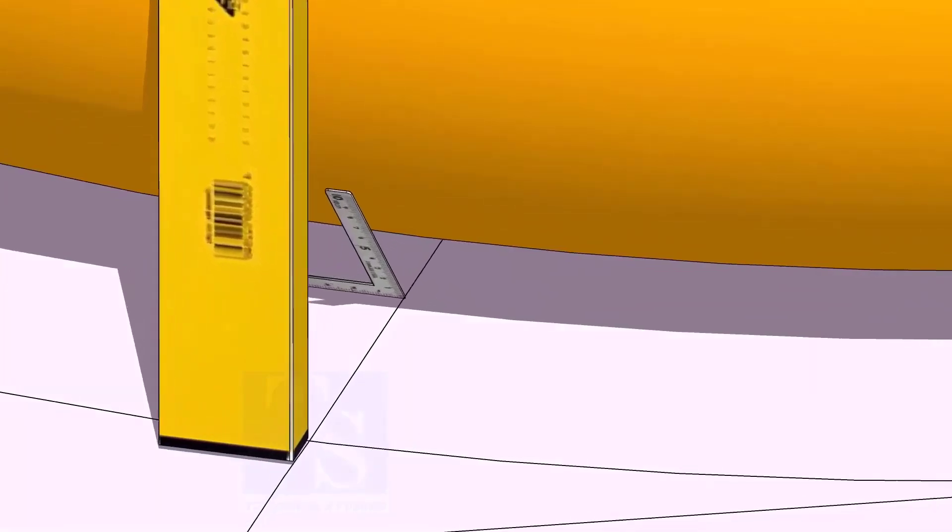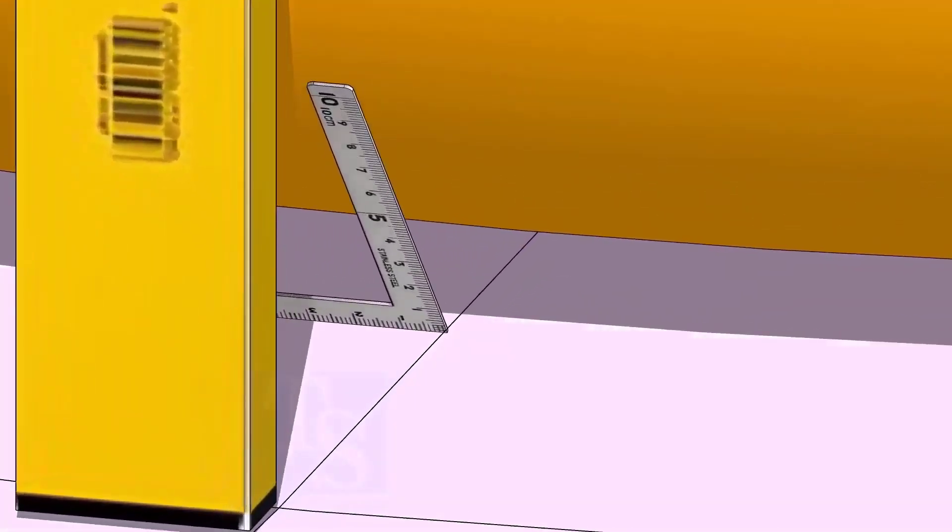At the bottom side, use a small right angle and transfer the line to the elbow on both sides.